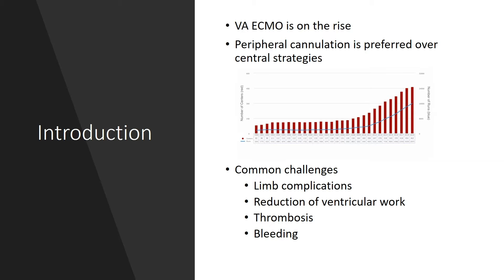Complications such as limb ischemia and subsequent threatened limb viability and thrombotic events are not infrequent and are devastating when they occur. But an increasing amount of data suggests that ventricular distention and poor drainage have deleterious effects on a recovering heart. In this series, we will discuss common scenarios where the application of additional venous or arterial cannulae may be necessary and familiarize the surgeon with the techniques to add these cannulae to standard configurations.